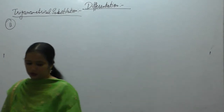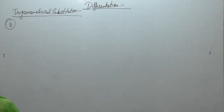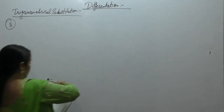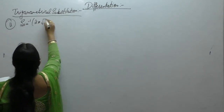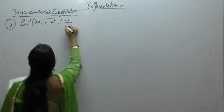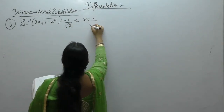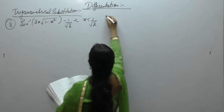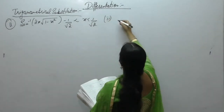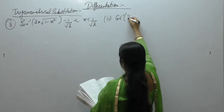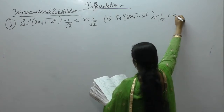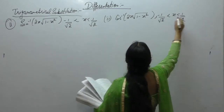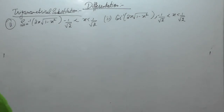Question number 11: differentiate with respect to x. First part: sine inverse of 2x times square root of 1 minus x squared, where minus 1 upon root 2 is less than x less than 1 upon root 2. Second part: cos inverse of 2x times square root of 1 minus x squared, where minus 1 upon root 2 is less than x less than 1 upon root 2.